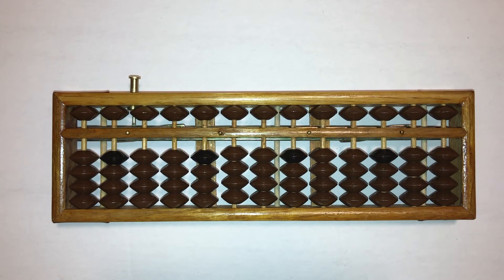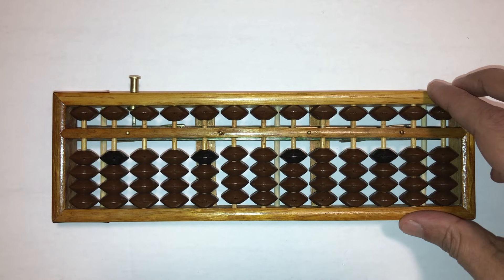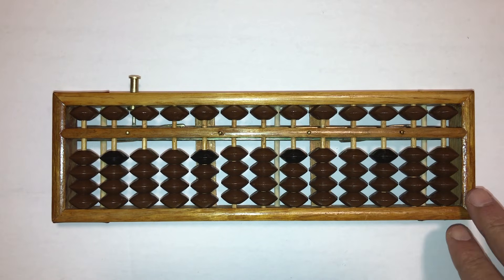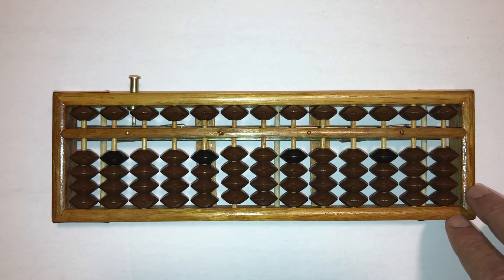But wherever you get one from, just make sure that it's about 10 inches in length with 13 columns. Now that we know how to pick the right kind of abacus, in the next lesson we will discuss the basics of using the abacus. Thanks again for watching. We'll see you in the next lesson.